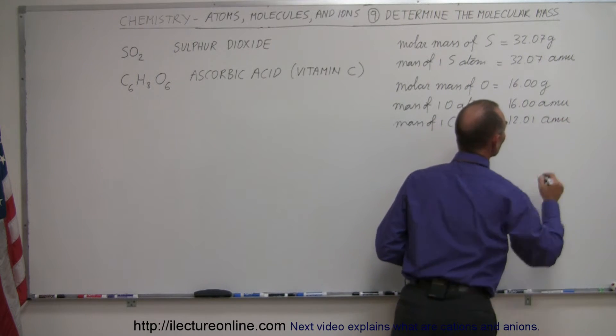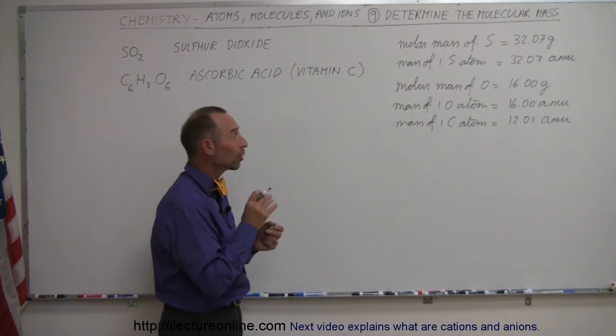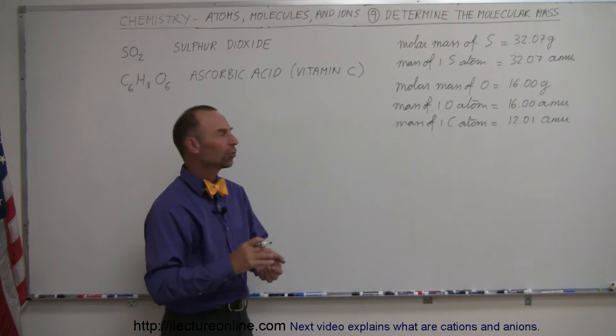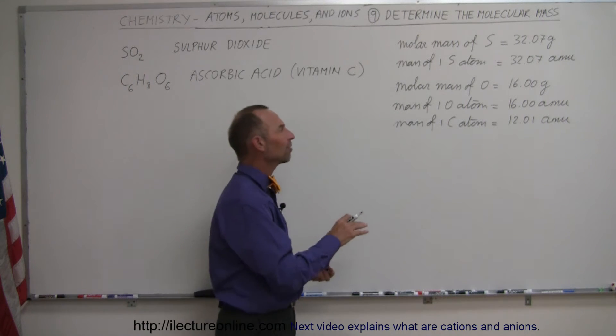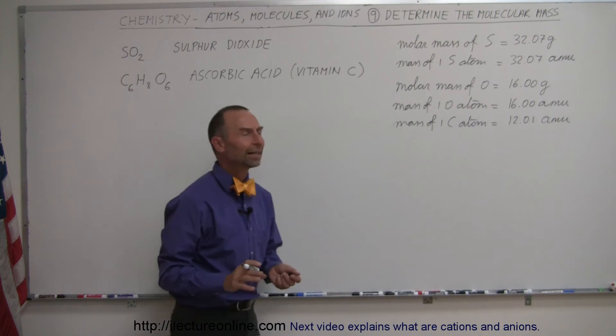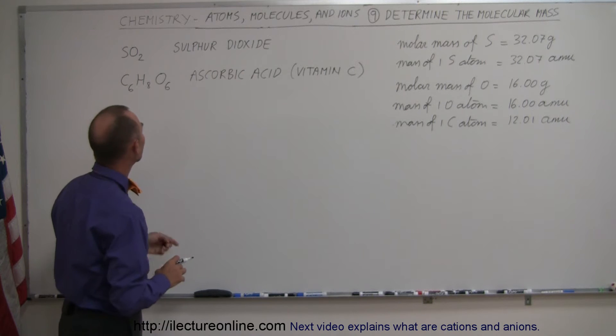Remember that the definition of an AMU is that it is exactly one-twelfth the mass of a carbon atom, but not just any carbon atom, the carbon-12 atom, which is the most abundant atom. But there's a few that have slightly higher masses, and so on average, you will have slightly greater atomic mass unit measurement for the average mass of a carbon atom.